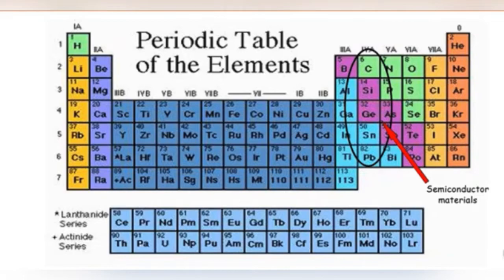Group 4 of the periodic table consists of a number of elements, but only some can be used as semiconductors. You have studied the periodic table earlier. In group 4, there are various possible elements like carbon, silicon, and germanium — all of these are known as semiconductors.